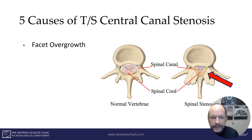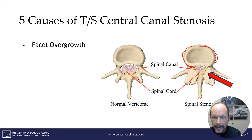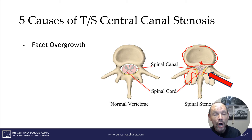The next cause is facet overgrowth or arthritis. The facet joint is a paired joint that occurs at each level of the spine — cervical, thoracic, and lumbar. Oftentimes, for a multitude of different reasons, it can get very arthritic. This is where the facet is, and when it gets arthritic it can actually push into the central canal, causing central canal stenosis. That's the second way in which central canal stenosis occurs.